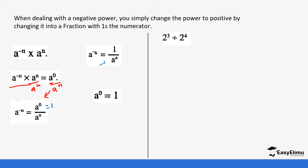Let's look at an example. We have two power three divided by two power four. When you have a division of indices under the same base, you subtract. So this is the same as two to the power of (three minus four), which gives you two power negative one. So you see you get a negative value. Two power negative one is the same as one over two power one, or simply one over two. That negative one makes it a reciprocal value of two.